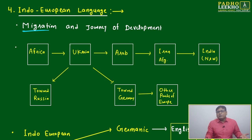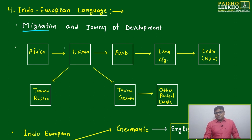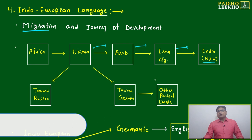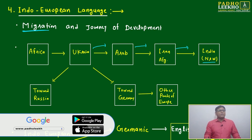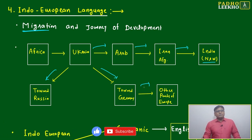Just suppose you are suddenly going to France — people are speaking French, so you have to learn it very fast to survive there. Migration decided this entire journey of development. In summary, the flow diagram shows it started from Africa, came to Ukraine; from Ukraine one group came to the Arab side, Iran, Afghanistan, then India — mainly the north and western part. From Ukraine another group went toward Russia, another toward Germany, and from Germany they spread to other parts of Europe.